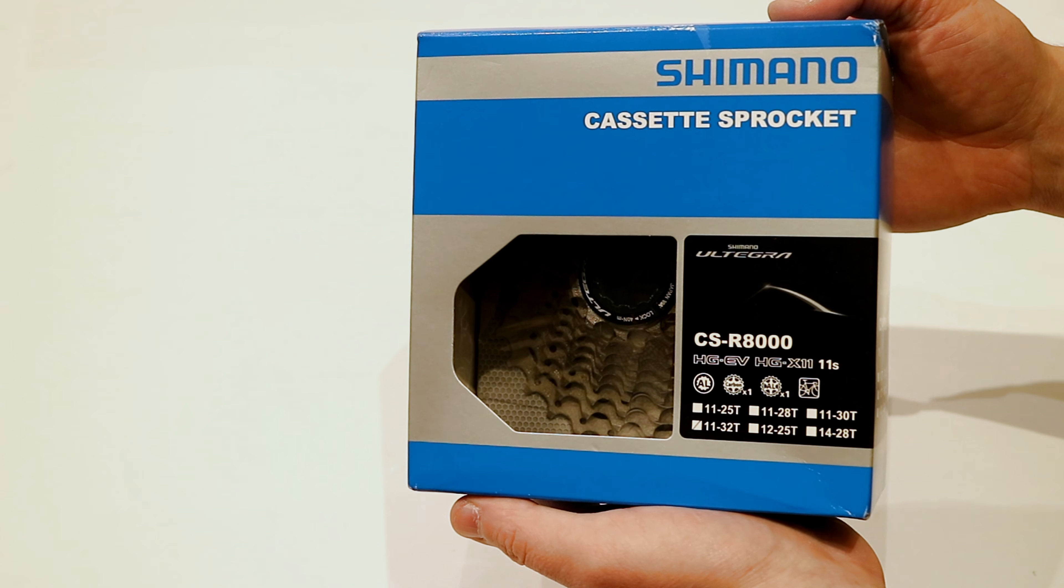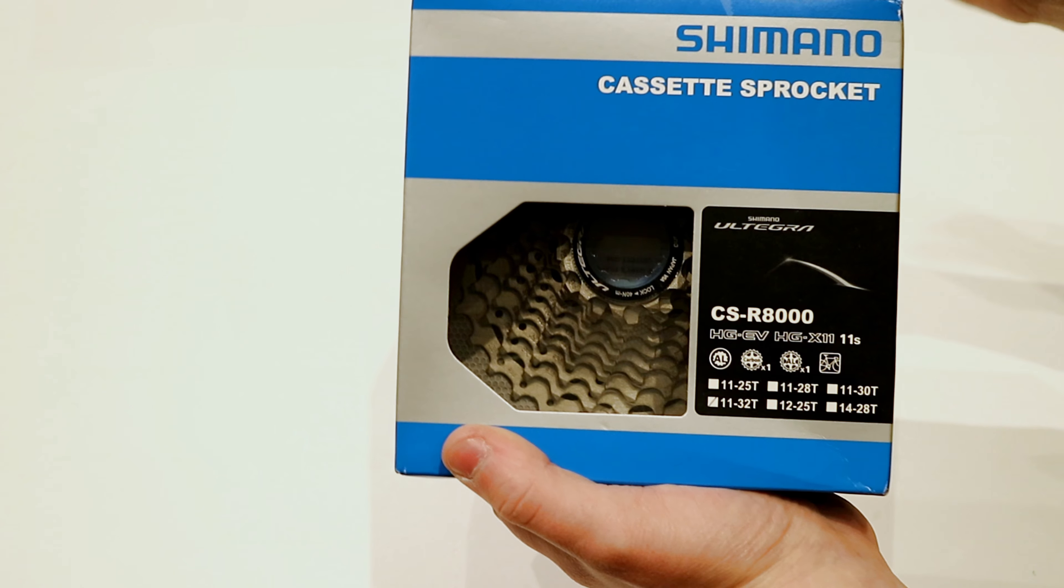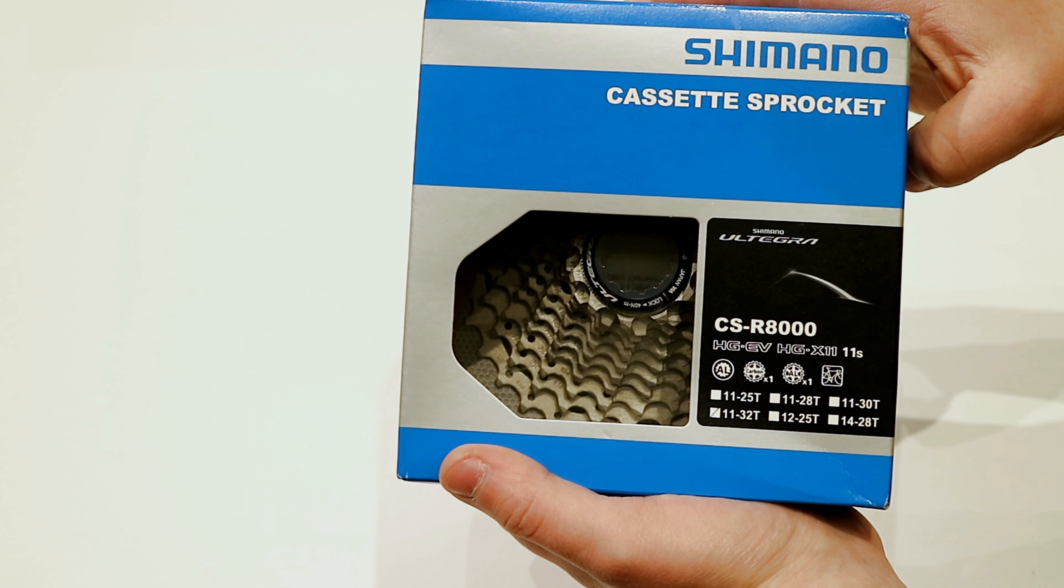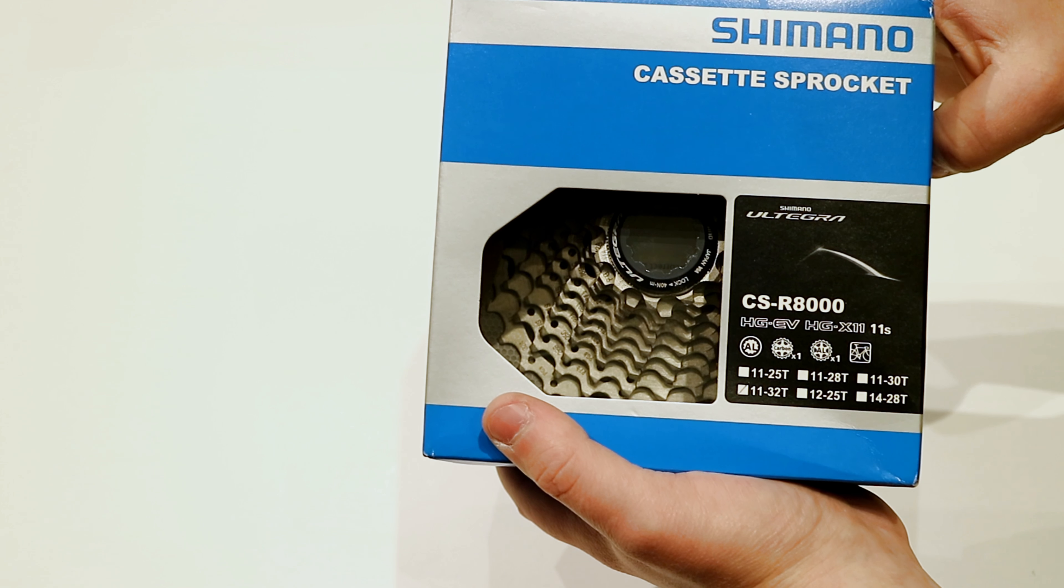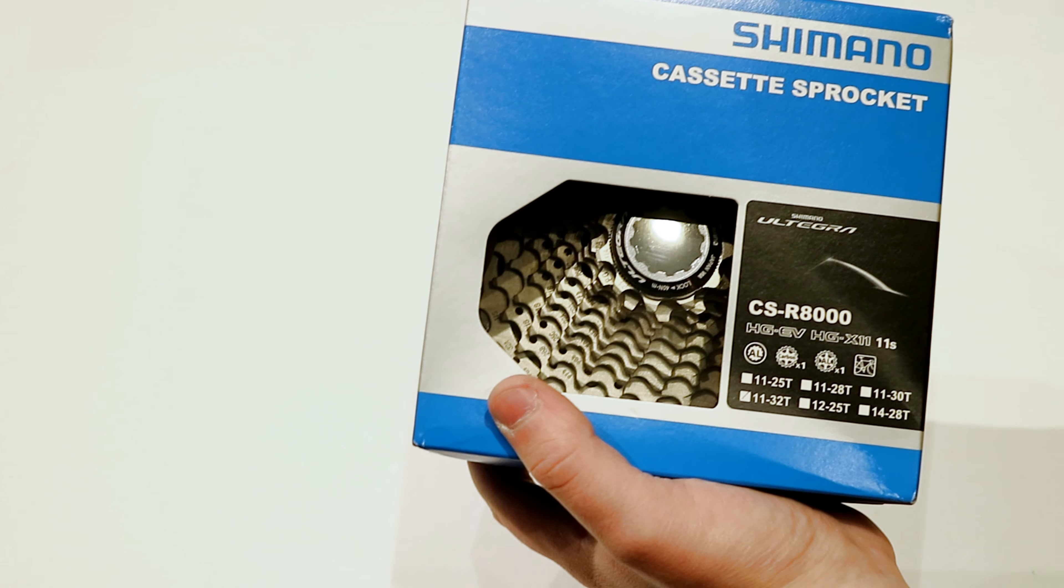On this James the Bike Guy, we're taking a look at the Shimano CSR8000 11-32 cassette. We're going to check out exactly what the steps look like, and then of course, get you an actual weight.